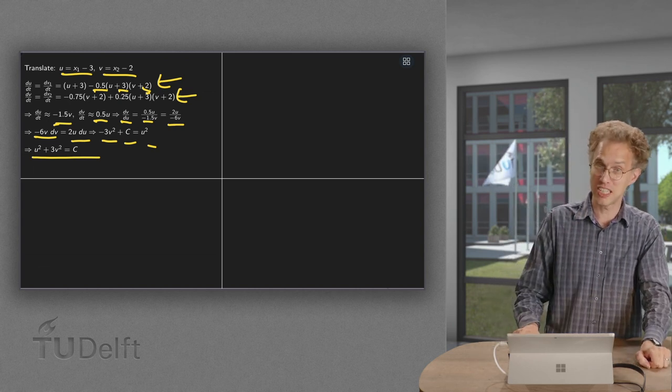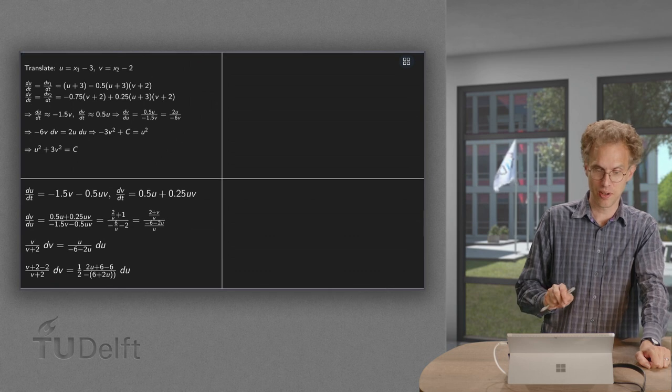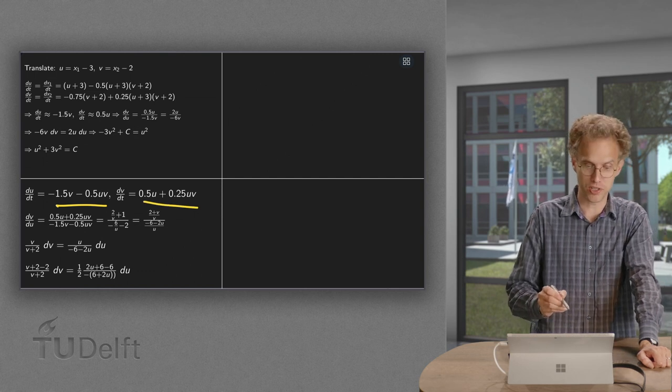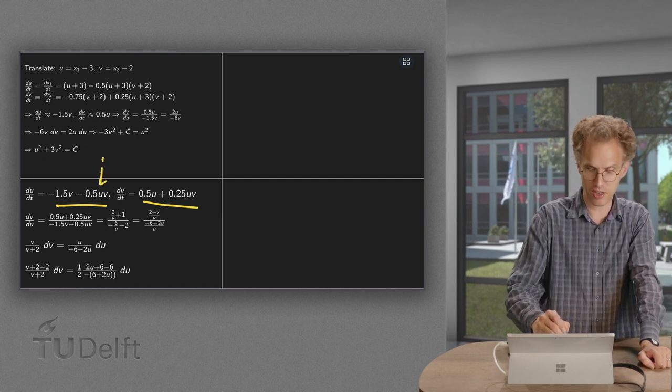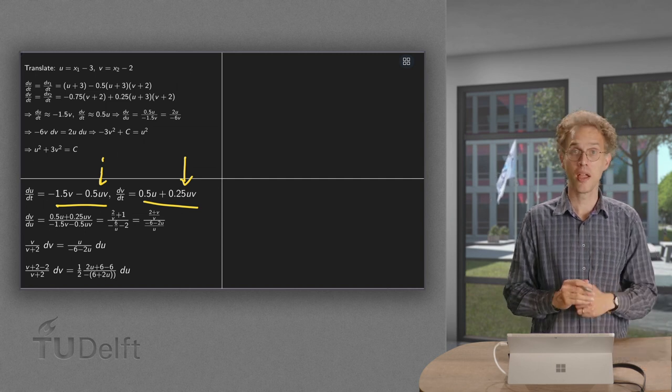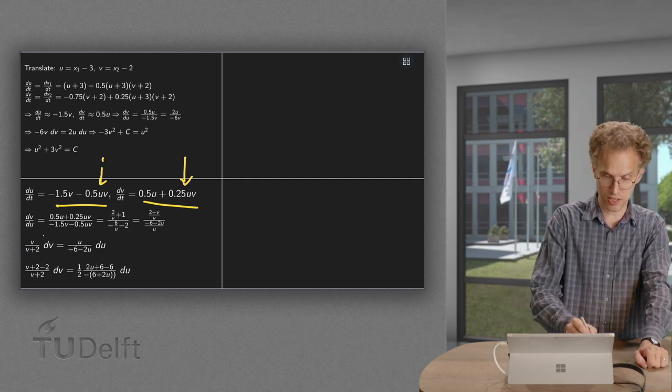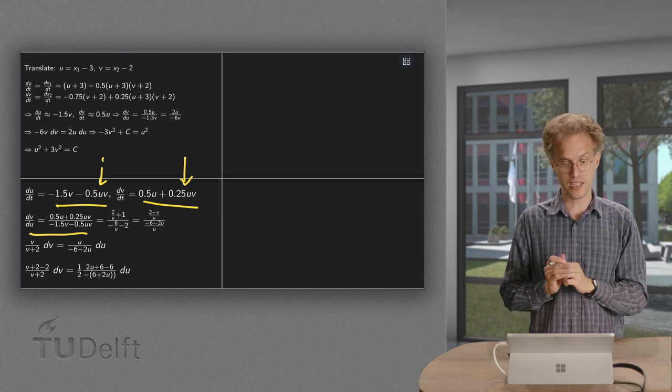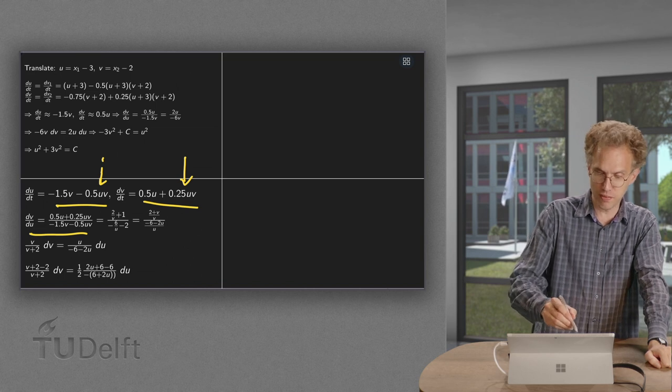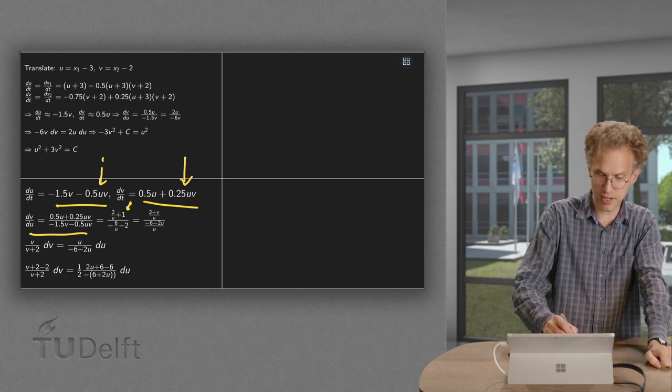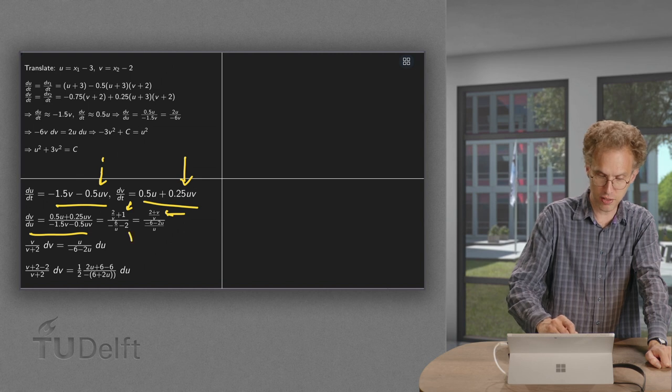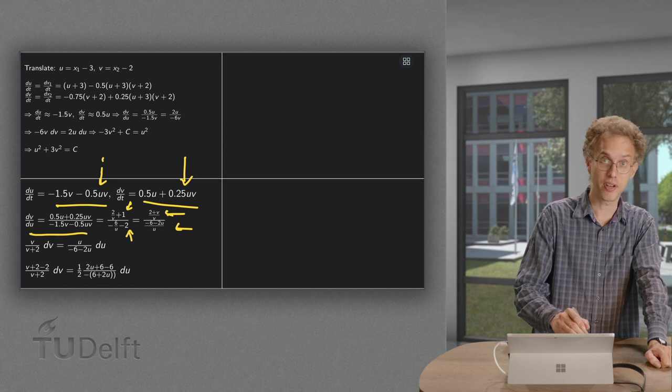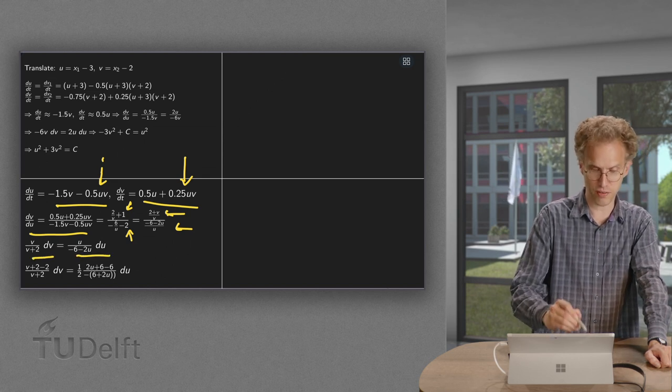But now we can apply the same trick non-linearly. So we have again du/dt and dv/dt almost the same but now some additional non-linear terms. And again here we can compute dv/du by dividing dv/dt by du/dt. And it's convenient to multiply here with v to get this term and multiply here with u over u to get this term.